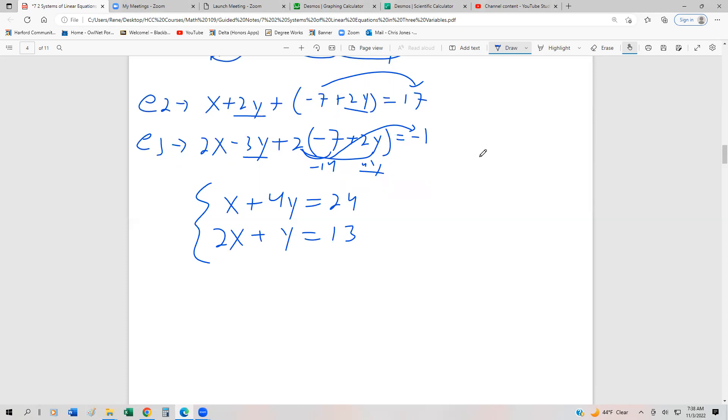Now what we can do is we can very easily solve. Let's multiply the first equation by negative 2. Because what that'll do is that'll give us a negative 2x and a positive 2x. And so now our system becomes negative 2x minus 8y equals negative 48. We distribute to all three terms. And then we have 2x plus y equals 13.